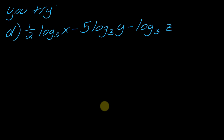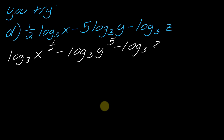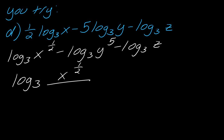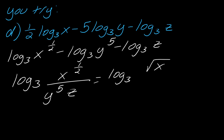Now pause the video and try this one, applying the logic we discussed earlier — hit play when you're ready. To solve it, I can write the exponents first. Then remember: minus signs mean those terms go in the denominator. So this becomes log base 3 of x to the 1/2 over y to the 5th times z. Some books want you to write x to the 1/2 as the square root of x, so it just depends on what's expected in your course.